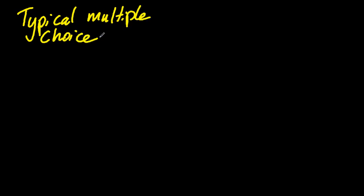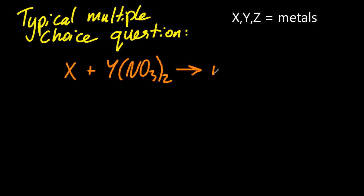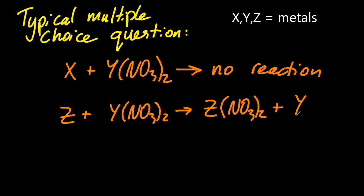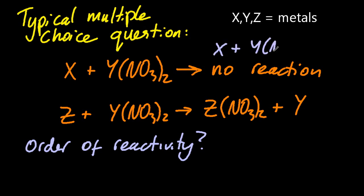Let's look at a typical multiple choice question that the IB could ask you. So multiple choice questions are expected to take you a minute and a half on average. So what's the order of the reactivity here? Well, at the top one, there's no reaction. So you can see that Y ends up as an ion. It started as an ion, and it ends up as an ion. So Y is more reactive than X.